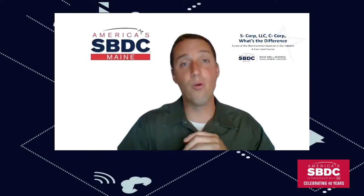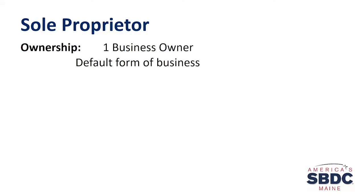If we break down the sole proprietor: the ownership structure is one business owner. It is the default form of business — if you start selling anything, by default you are a sole proprietor. In Maine, a sole proprietor has to register with their town but not the state. In Northern Maine especially, some towns don't even have a registration. So sole proprietor is the easiest form of business to get into. That's one of the largest pros — it's really easy to get into business, not much paperwork.